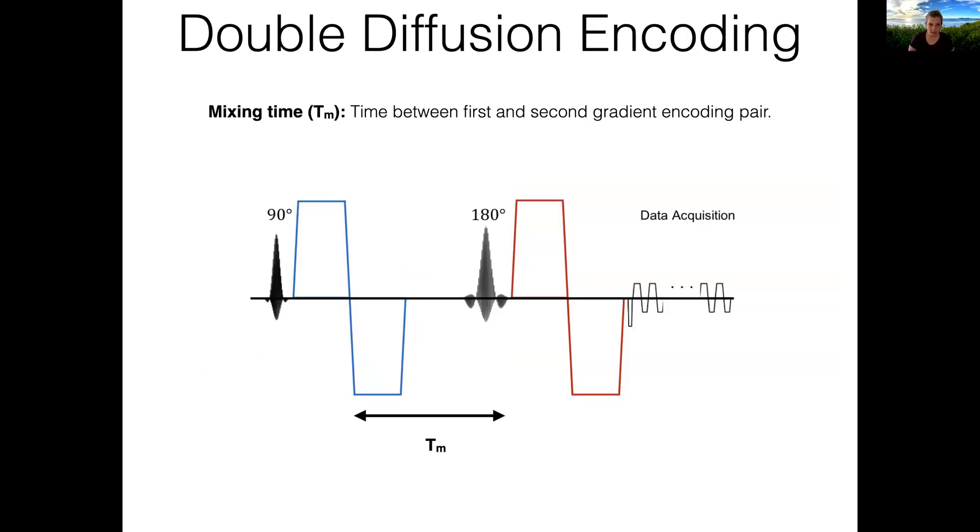If we look at the double diffusion encoding sequence, there are a couple of key features. First, the time between the first and the second diffusion encoding pair is referred to as the mixing time. By varying the mixing time, the correlation of the diffusive motion between the two diffusion encoding pairs can be controlled. Short mixing time experiments produce a signal modulation related to the size of the restricted compartments, even for relatively small diffusion encoding gradient areas.